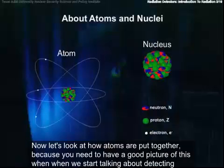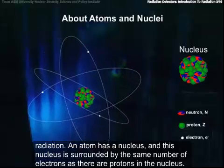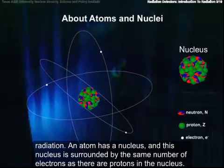Now let's look at how atoms are put together, because you need to have a good picture of this when we start talking about detecting radiation. An atom has a nucleus, and this nucleus is surrounded by the same number of electrons as there are protons in the nucleus.